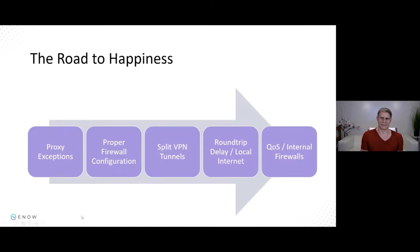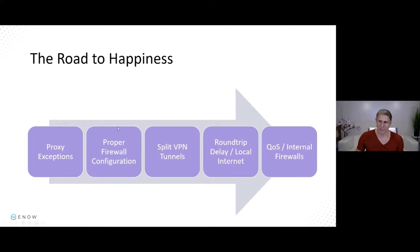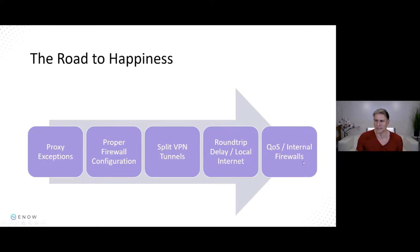So let's look at the summary — your road to happiness. It's not about blaming the network, it's about making sure the network behaves properly and explaining that to the networking teams. The key items: proxy server exceptions, proper firewall configuration with all required ports, IPs, and URLs; implement split tunneling on VPN; ensure internet connections are optimized for round trip delay; and optionally implement QoS and configure internal firewalls with the right ports.